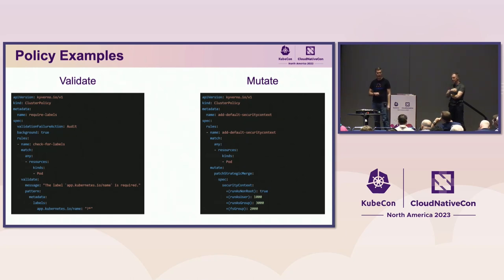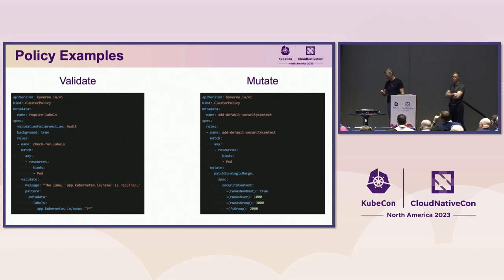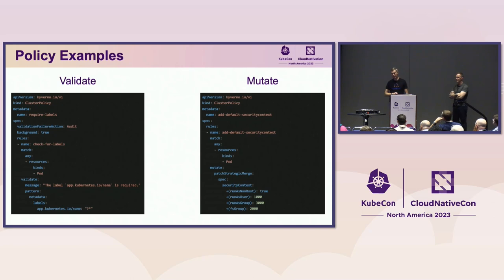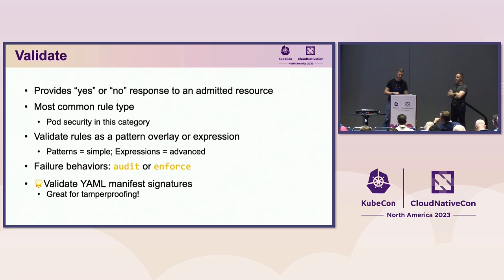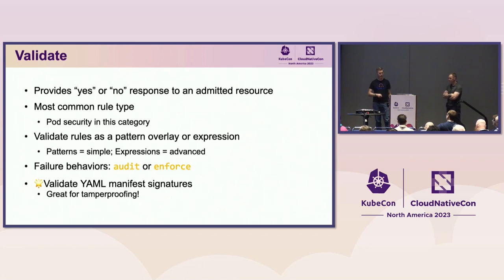Here are live examples of what a typical Kyverno policy looks like. On the left is a validation rule — the yes or no response. This one just checks for a label, and you can probably determine what it's doing even without prior Kyverno experience; there's no Rego, no programming, just a simple overlay syntax. Validate rules can be written using a pattern overlay for simpler styles or more complex CEL expressions. There are two failure behaviors: audit mode, where the resource is allowed regardless, or enforce mode, where it's blocked if bad. Kyverno also has the ability to validate YAML manifest signatures using Sigstore's Cosign tooling.